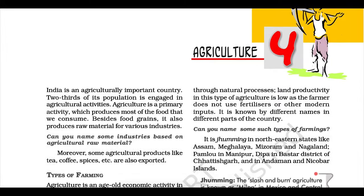Commercial farming. The main characteristic of this type of farming is the use of higher doses of modern inputs, e.g. high-yielding variety seeds, chemical fertilizers, insecticides, and pesticides in order to obtain higher productivity. The degree of commercialization of agriculture varies from one region to another. For example, rice is a commercial crop in Haryana and Punjab, but in Odisha, it is a subsistence crop.